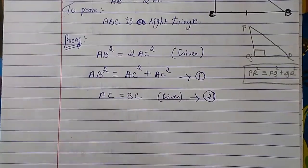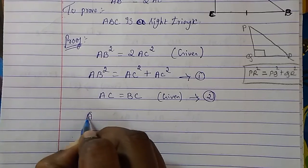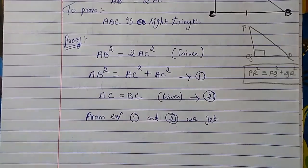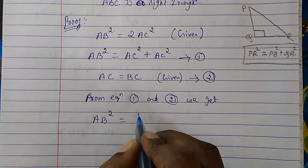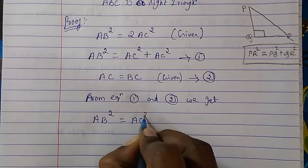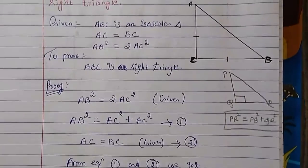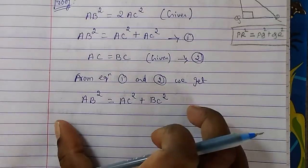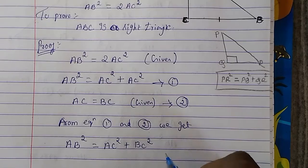From equations 1 and 2, instead of one AC we can substitute BC. So we get AB square equal to AC square plus BC square. Now AB is the hypotenuse, and AB square equals AC square plus BC square. This proves the Pythagoras theorem condition, so it has to be a right angle triangle.